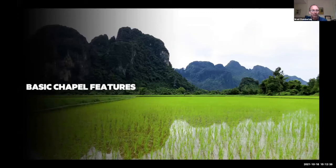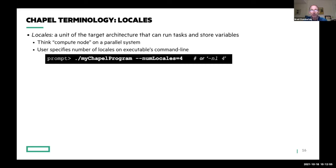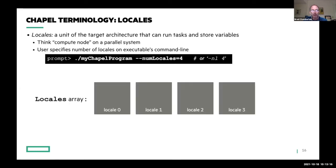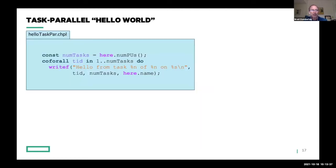Now I'll give you a brief tour of a couple of Chapel features key for the rest of the talk, focusing on lower-level features: support for creating tasks and controlling locality. One term you need to know is 'locales.' In Chapel, a locale is the unit of the target architecture that can run tasks and store variables — on most HPC systems you can think of a locale as a compute node. When you run a Chapel program, you specify the number of locales on the command line, and the program starts as a single task in locale zero.